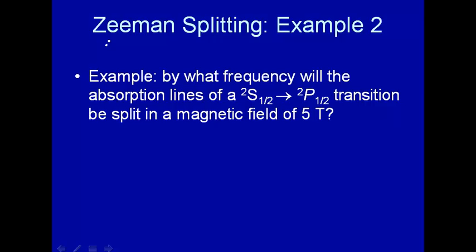Let's do another example to illustrate Zeeman splitting. By what frequency will the absorption lines of a doublet S one-half to a doublet P one-half transition be split in a magnetic field of 5 tesla? You may recognize this from the previous example. We saw that each one of these energy levels would be split into a doublet with a magnetic field.